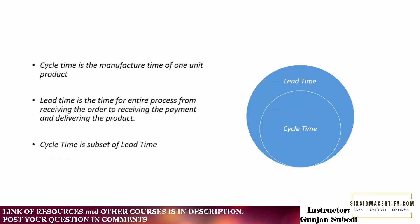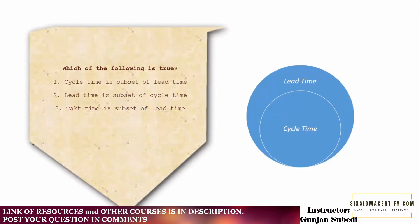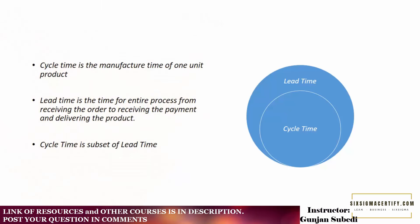Cycle time is the manufacture time of one unit product and lead time is the time for entire process from receiving the order to receiving the payment and delivering the product. So cycle time is the subset of the lead time because all the processes or the steps that are used in order to calculate the cycle time are inside the lead time itself. So it's the subset of the lead time. And this point particularly is very important in the competitive exams. You may receive statements like which is the subset of what? Is cycle time subset of lead time? Yes. Is lead time subset of cycle time? No. Is takt time subset of lead time? Again no. Because takt time is used to find out what should be the rate of production in order to meet the customer's expectation. So this is all about the lead time and by now you have already studied about the cycle time, takt time and lead time.